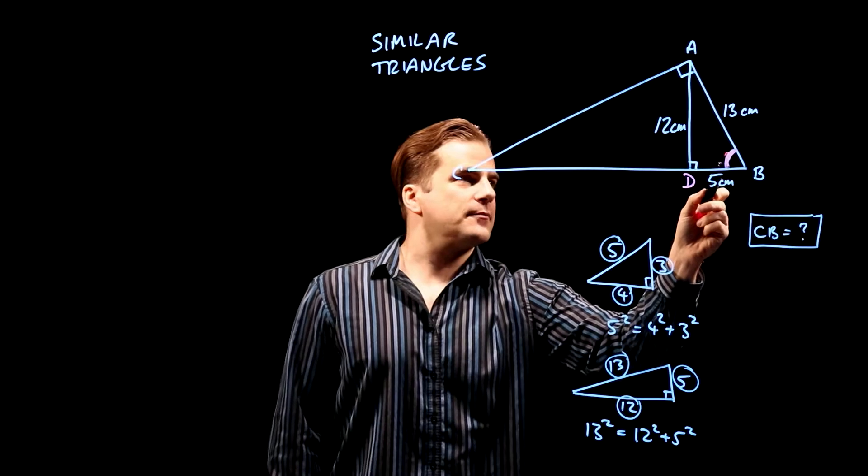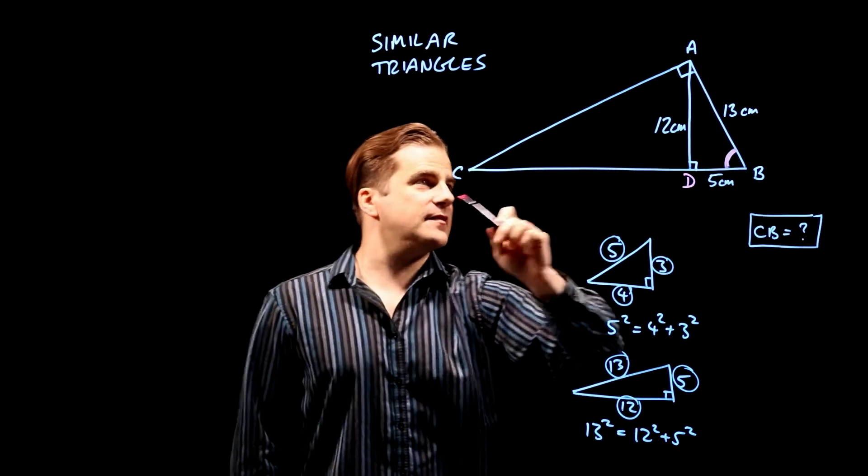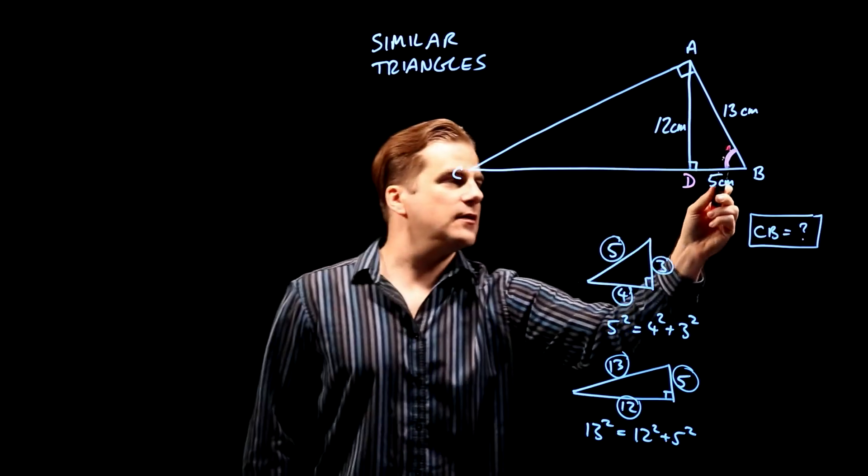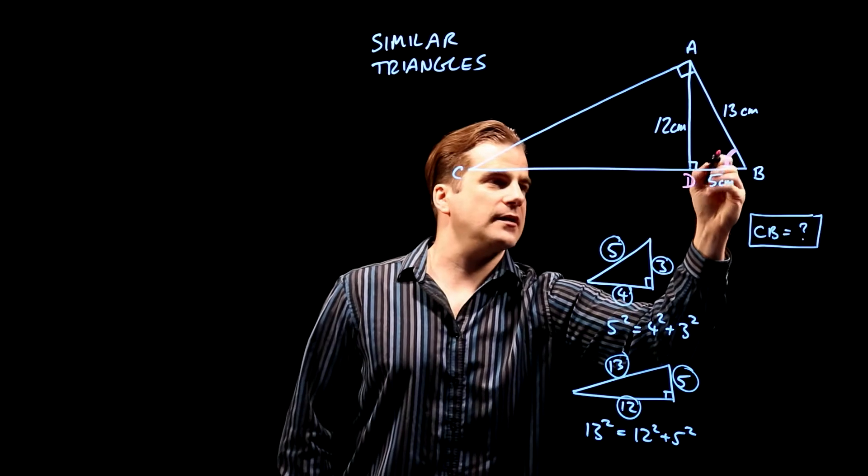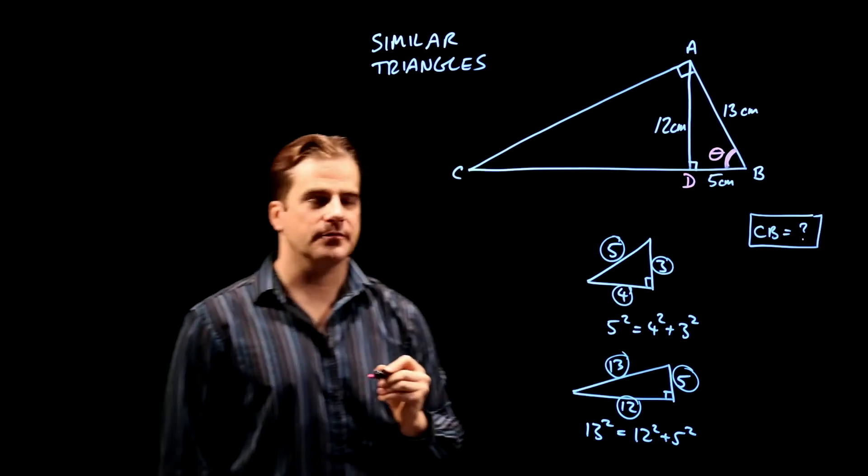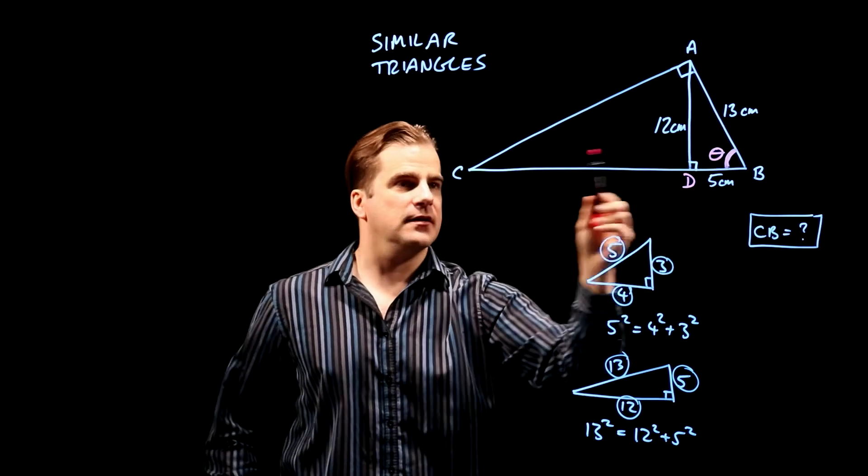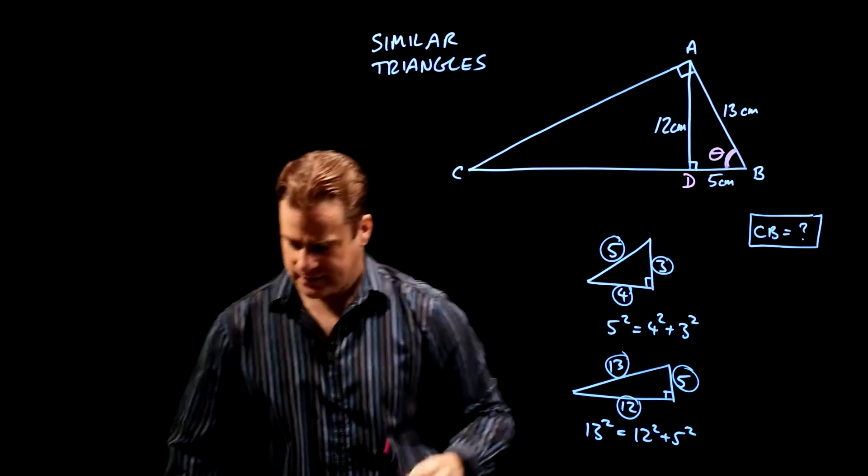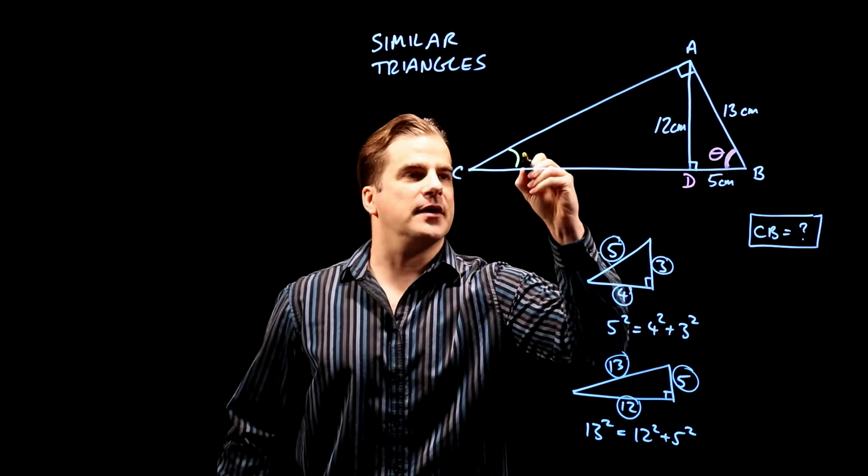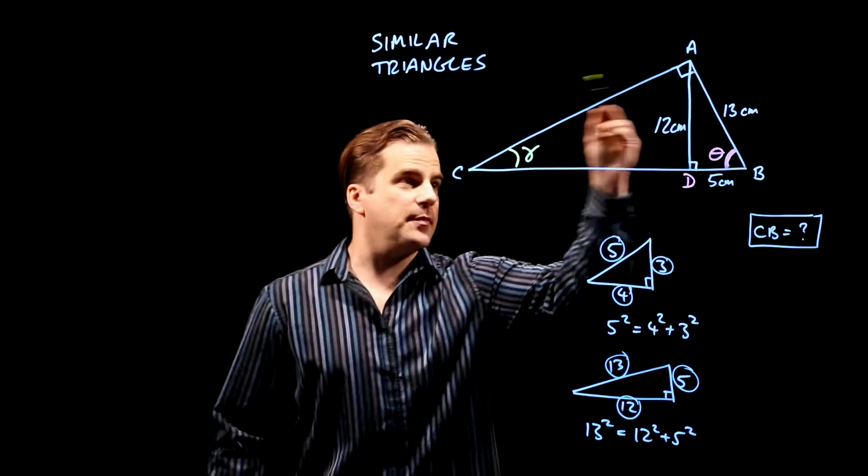So look at the big triangle, ABC. You have a right angle in it. This angle here, I'm going to call it theta. So the big triangle has a right angle, theta, and this third angle. Let's call this third angle gamma. That's the big triangle.